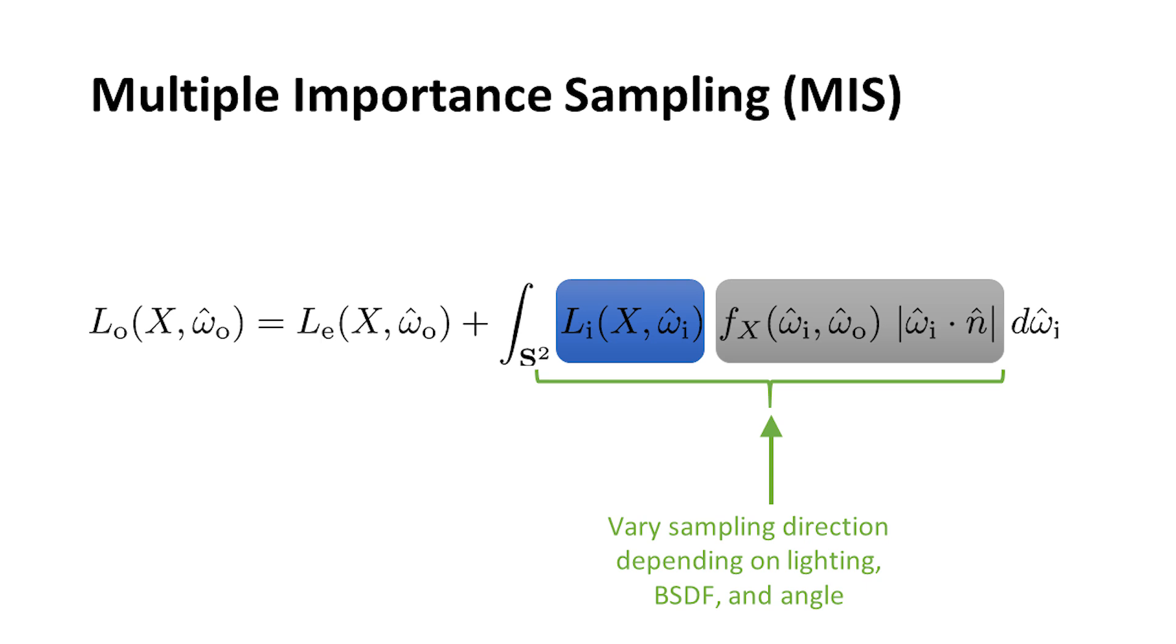That can be expensive. So there's yet another way that we try to reduce the load—it's called multiple importance sampling. Here we say, we will vary by the material, but we also want to vary using the light direction. If we know that there's an important light source in the room, we'll add that in as an important place to shoot rays. So instead of shooting them randomly, we'll shoot some rays towards that light.